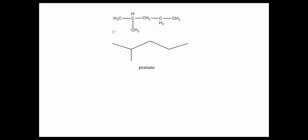According to the rules for naming alkanes, I should start the numbering to give the branches the lowest possible number. Counting from the left side gives the methyl group on carbon two, and counting from the right also gives carbon two. So there's a methyl group on carbon number two, and the name of this compound is 2-methylpentane.